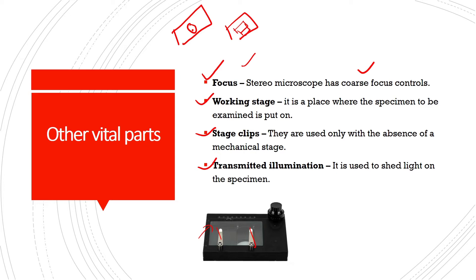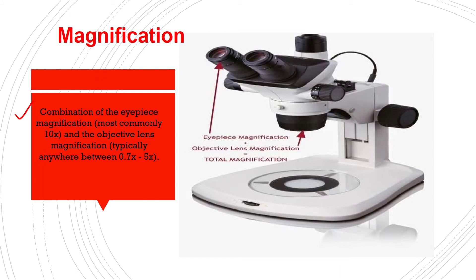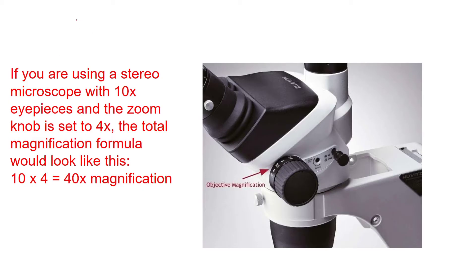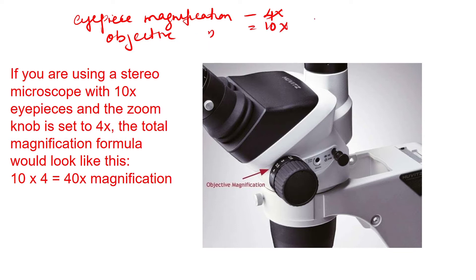The total magnification power of a stereoscopic microscope is the combination of the eyepiece magnification and the objective lens magnification. For example, if the eyepiece magnification is 4x and the objective magnification is 10x, then the total magnification equals 4x multiplied by 10x, which gives 40x.